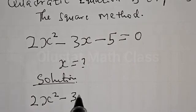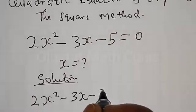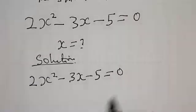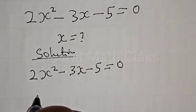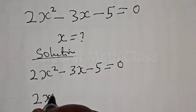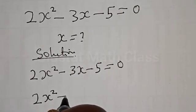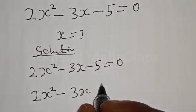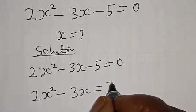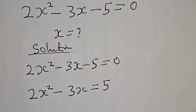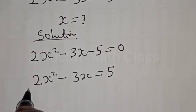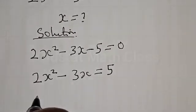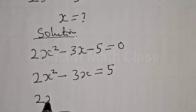Solution: 2s² - 3s - 5 = 0. We rearrange the equation as 2s² - 3s = 5, moving -5 across the equal sign to become +5 on the right side.